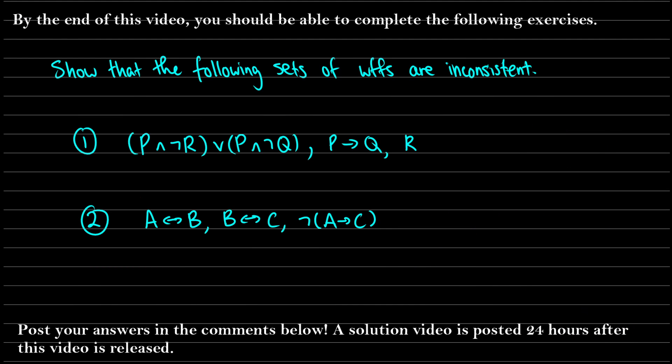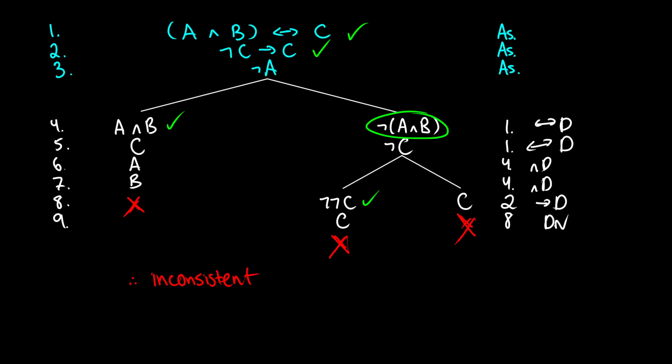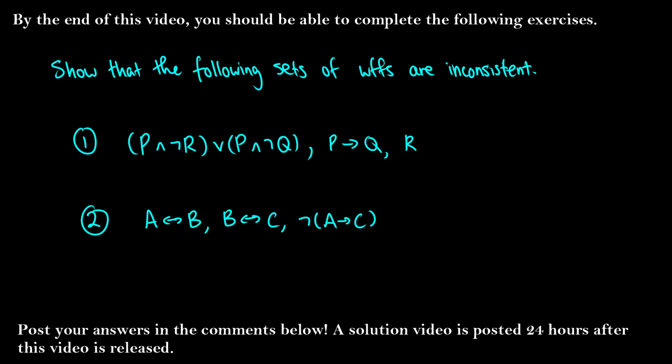As an exercise, I'd like you to try these two sets. The first has P and (not R or P) and not Q, P arrow Q, and R — that'll be inconsistent. The second has some more biconditionals: A if and only if B, B if and only if C, and not A arrow C — those are also inconsistent. If you have any questions, post them in the comments below and I'll get to you when I can.